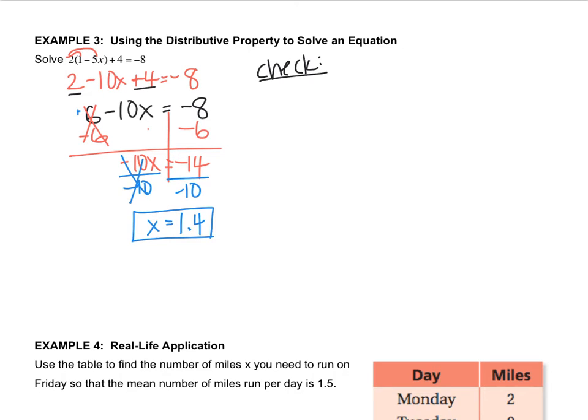The way that you check is you rewrite the equation but wherever you see an x you put 1.4. So 2 parenthesis is 1 minus 5 times 1.4 plus 4 equals negative 8. Now since I'm not doing any inverses I'm just going to do regular order of operations. Inverses are only used when you're solving the equation for the variable. When you have the variable you just do it like you did back in 5th and 6th grade.